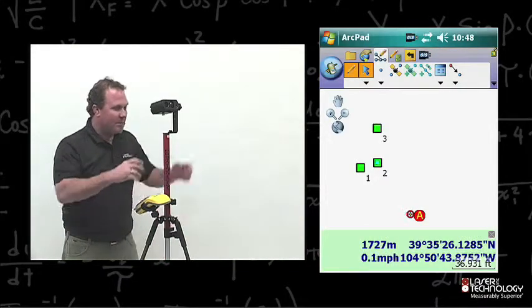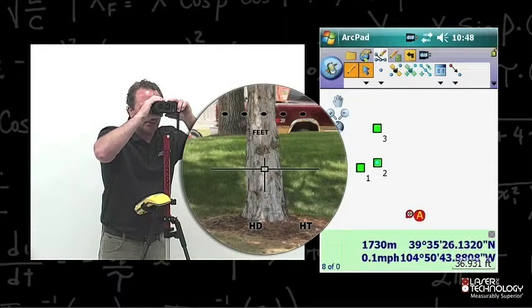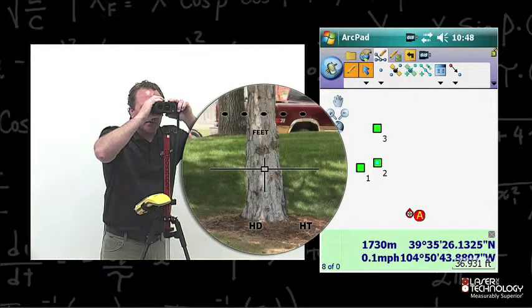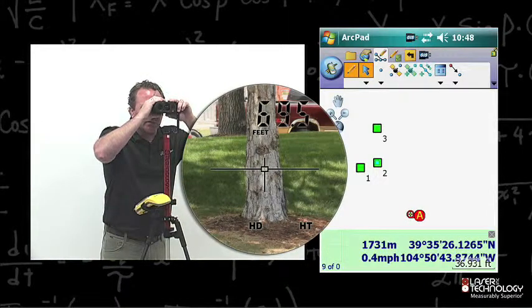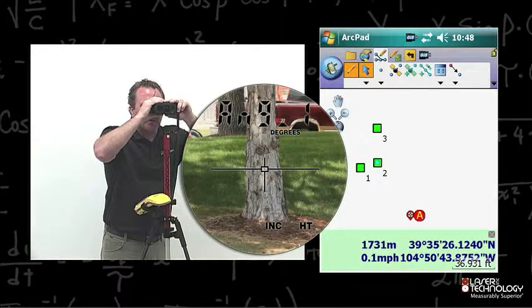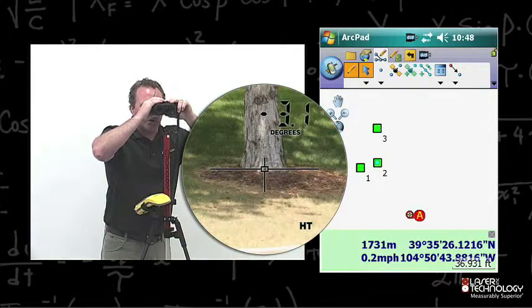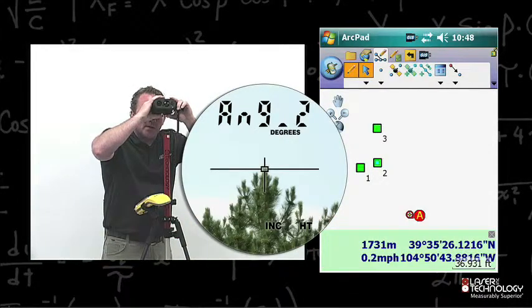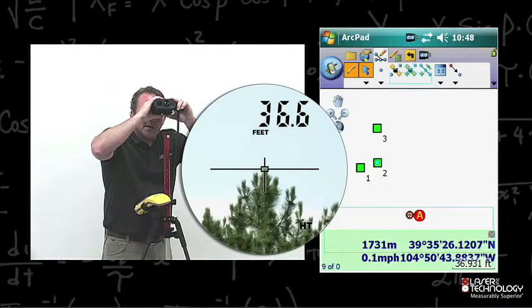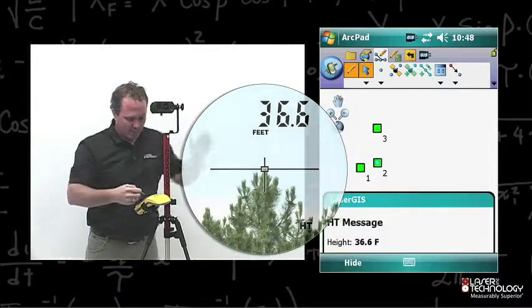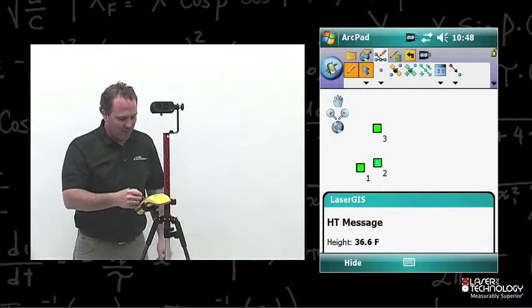From here, just perform another height routine on point number two. Take a horizontal distance measurement. It prompts me for angle one. Do a base angle. It prompts me for angle number two. Take a top angle. A height value is shown. Again, LaserGIS notifies me that I have a height value.